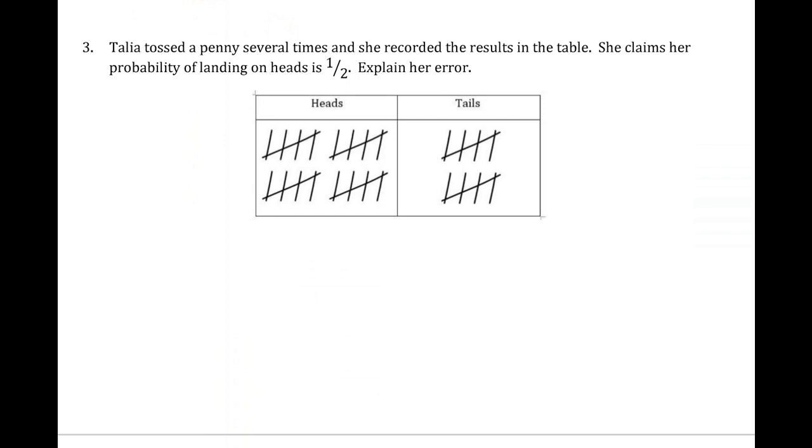Talia tossed a penny several times, and she recorded the results in the table. She claims her probability of landing on heads is one-half. Explain her error.